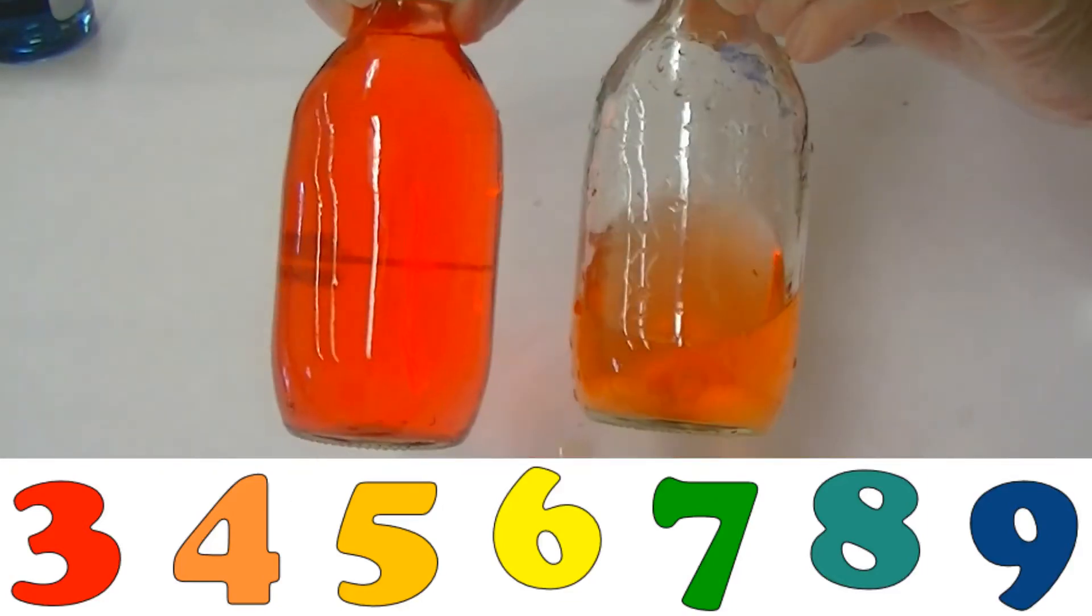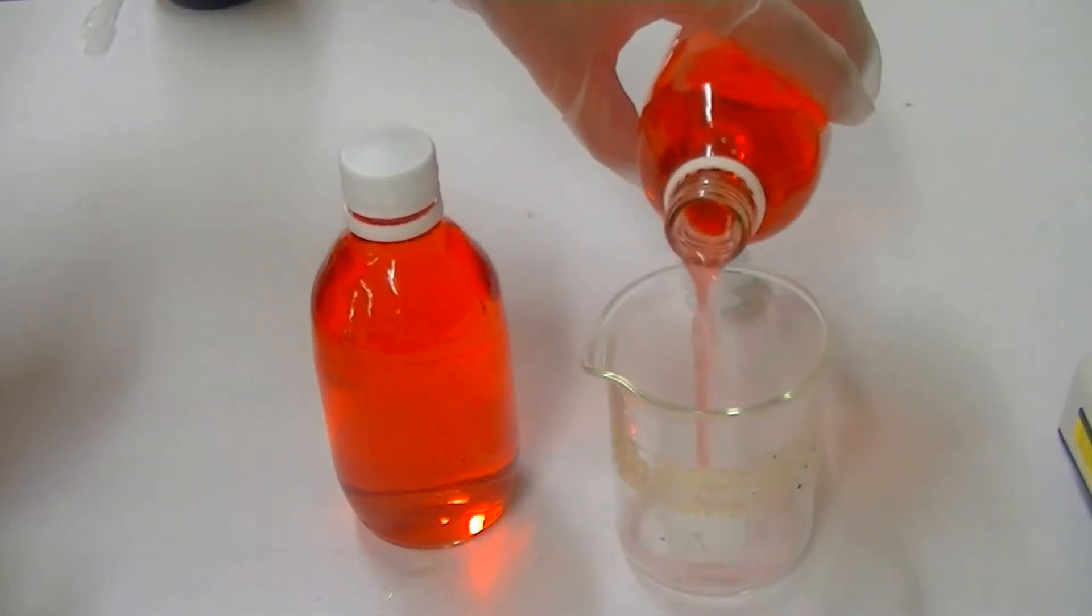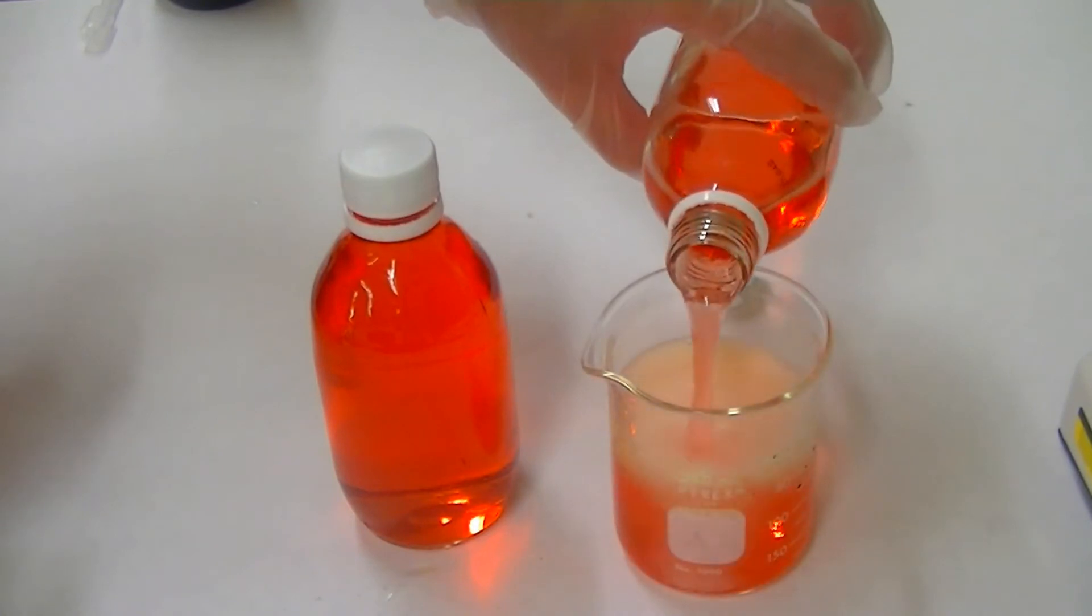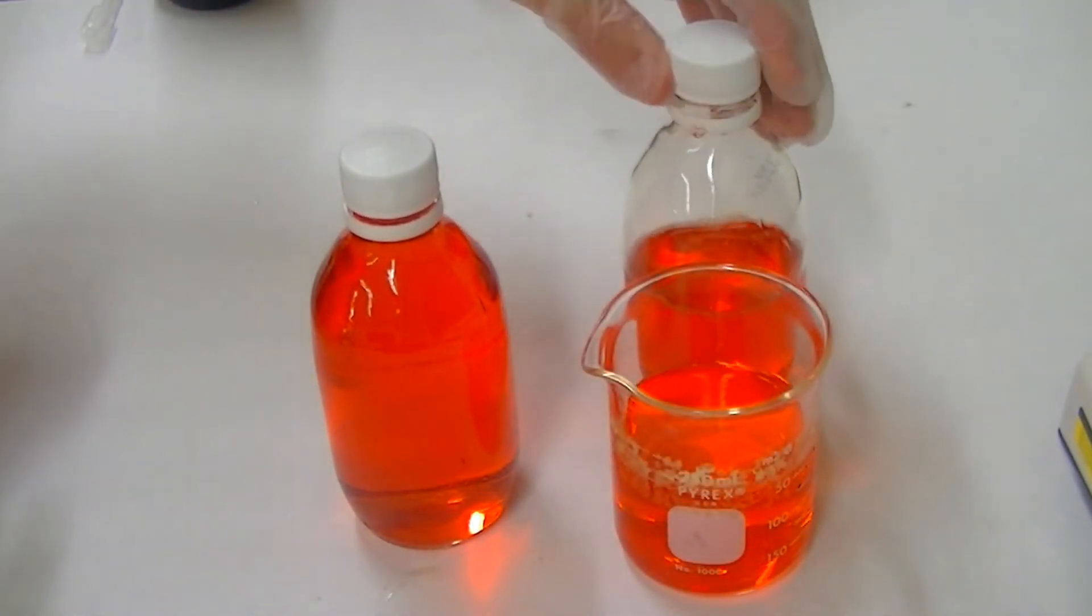Now we need to test the idea that something in the Mentos, and not the loss of carbon dioxide, is what is causing the color change. To do this,